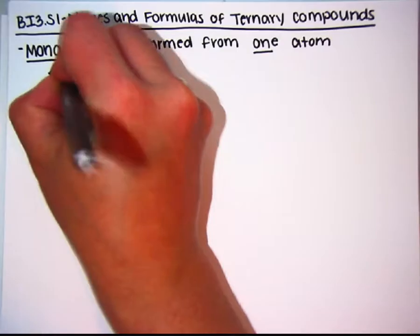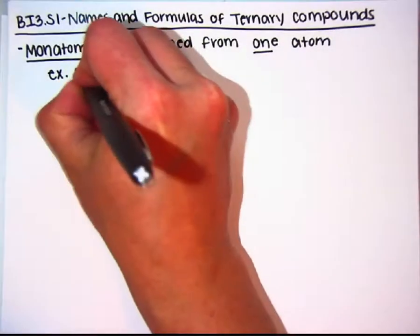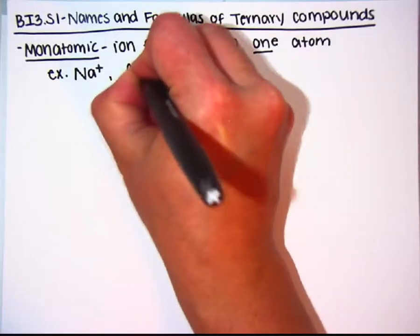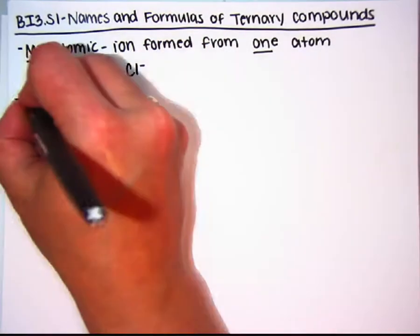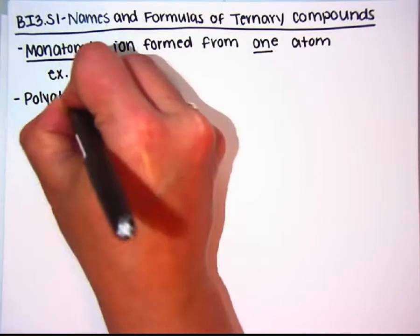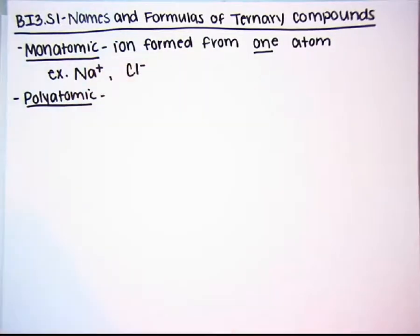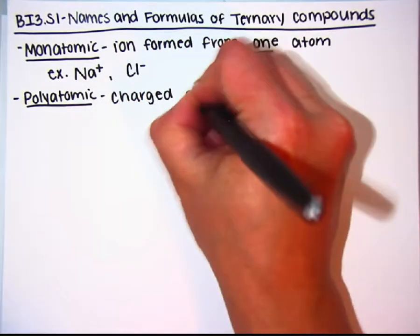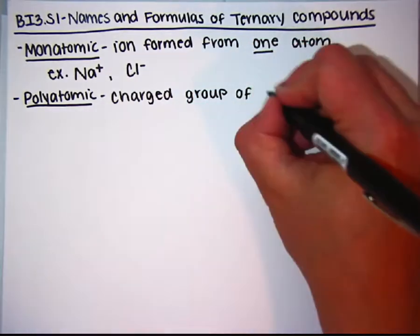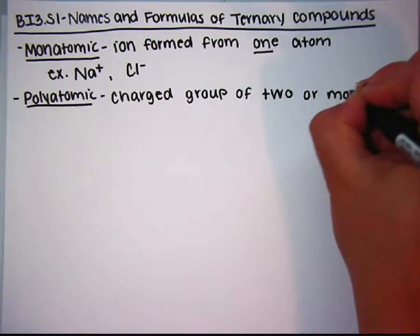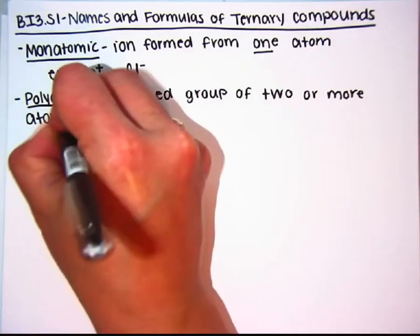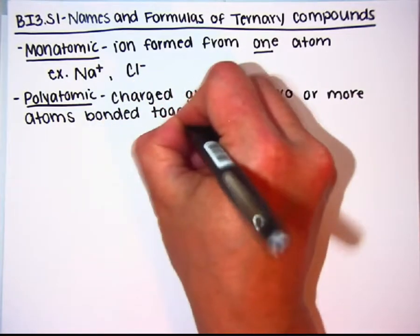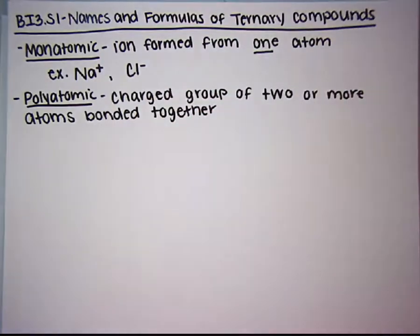So what we did in the last lecture, we were doing monatomic atoms. Sodium is monatomic — it is just made from sodium. Chlorine, monatomic — it is just made from chlorine. Today, we're going to be using polyatomic ions. The prefix poly means many. Polyatomic ions are a charged group of two or more atoms bonded together.